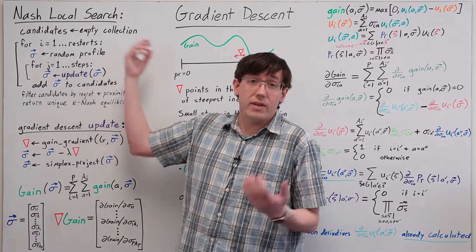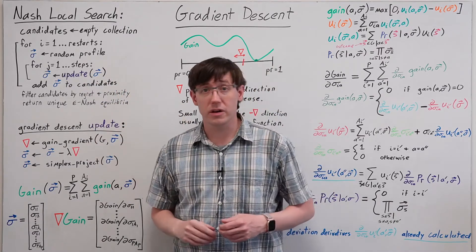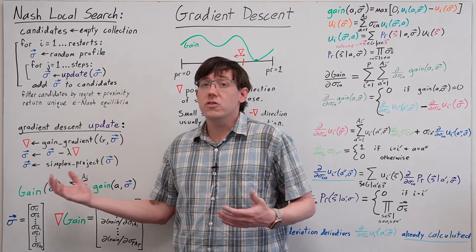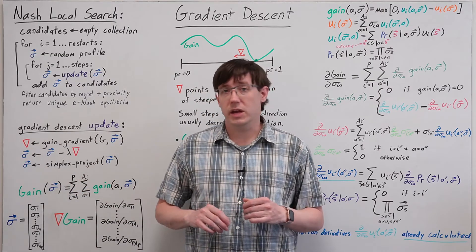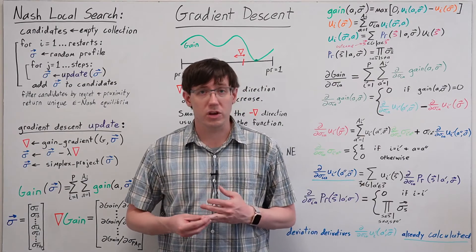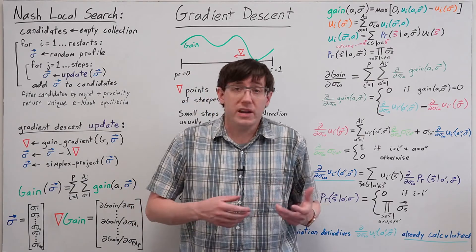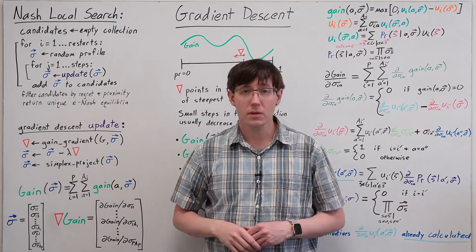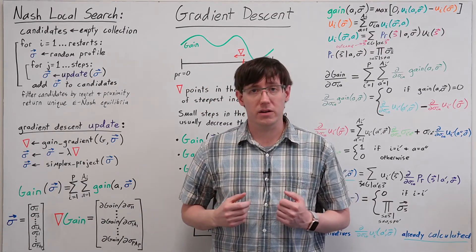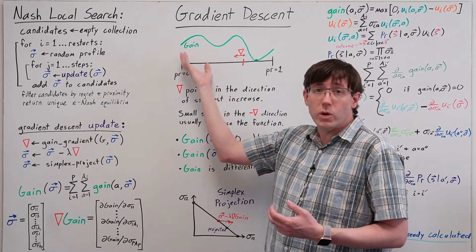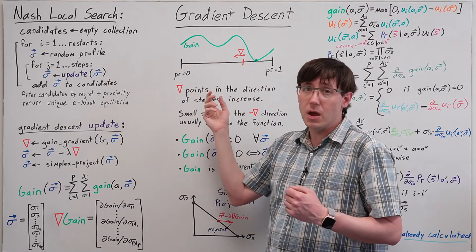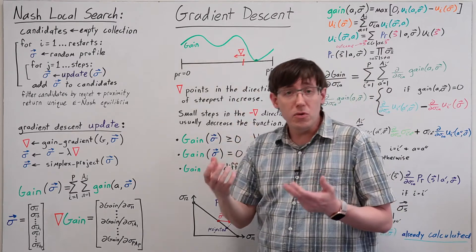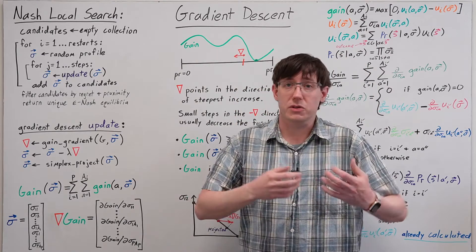Within this class of algorithms, we'd be remiss not to consider the most popular local search technique. Gradient descent appears all over the place in artificial intelligence and machine learning, as well as many other contexts within math and computer science. The core idea of gradient descent is that to minimize a continuous differentiable function, we can take small steps downhill by moving in the direction opposite the gradient.